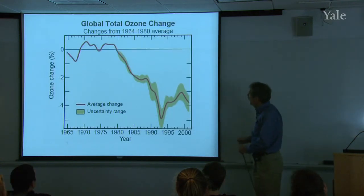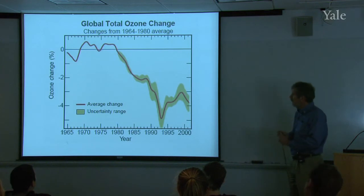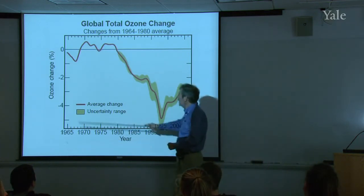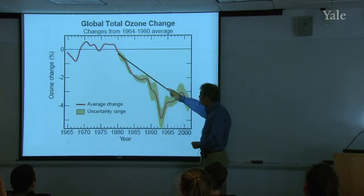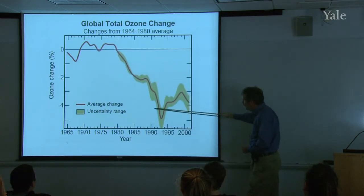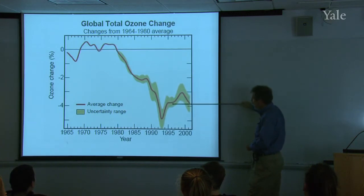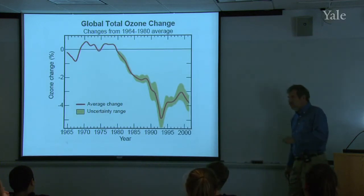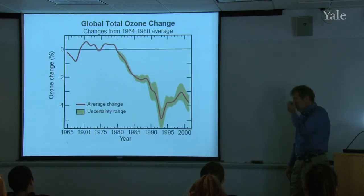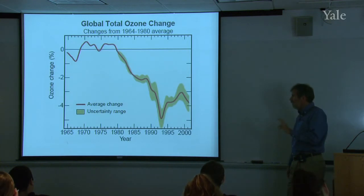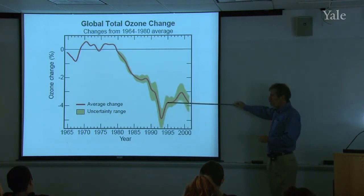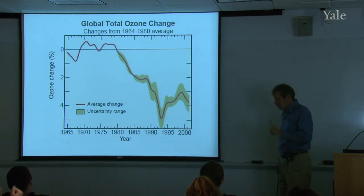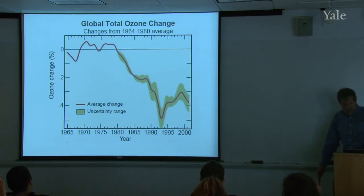Here is the global averaged total ozone change in percent, starting back in 1965. Around 1980 is when we began to see the rapid decrease, but it's not huge — it's only about 4% below where it started, and it's leveled out today. So this global decrease in ozone is something we should be concerned about, but it's not a huge factor, and it doesn't look like it's going to get any worse now that we've stopped putting CFCs into the atmosphere.